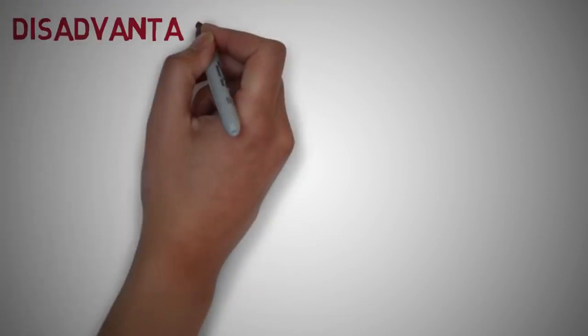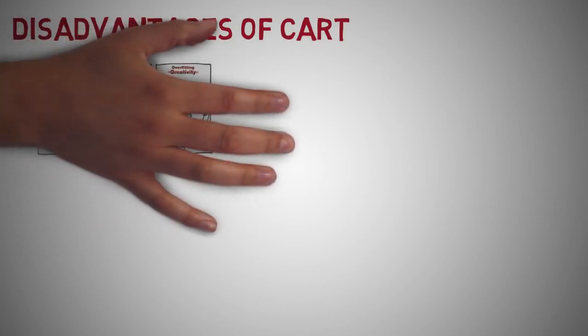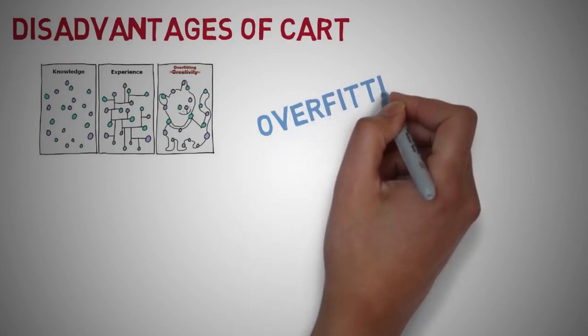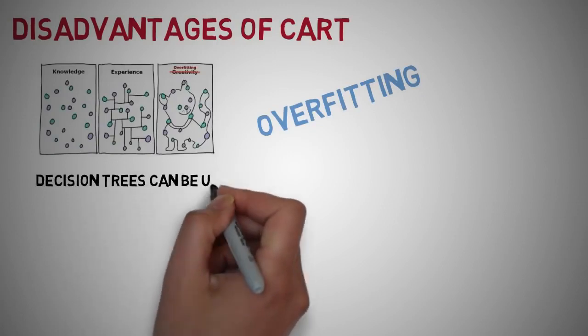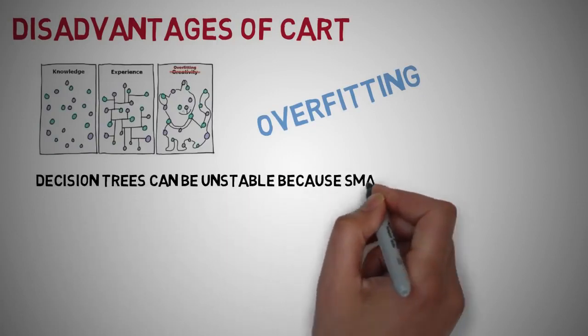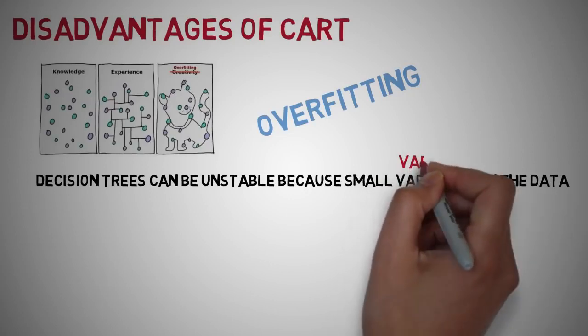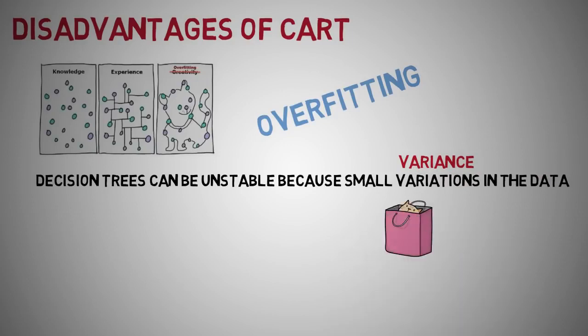The disadvantages of CART, however, is that decision tree learners can create over-complex trees that do not generalize the data well. This is also known as overfitting. Decision trees can become unstable because small variations in the data might result in a completely different tree being generated. This is called variance, which needs to be lowered by methods of bagging and boosting.